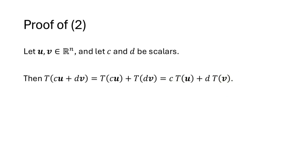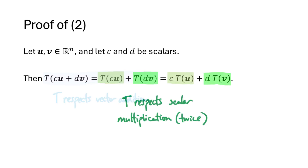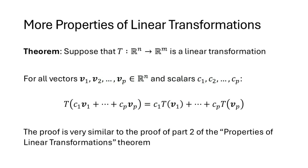For the second property, T(cu + dv) can be rewritten as T(cu) + T(dv) using the fact that T respects vector addition, and then as c·T(u) + d·T(v) using the fact that T respects scalar multiplication — applied twice. This extends naturally: T of a linear combination of any number of vectors equals the linear combination of the T-values, with a proof very similar to this one.